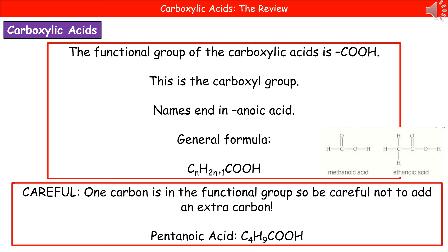For example, looking at pentanoic acid: we know it has five carbons because of 'pent,' but only four of them go into the carbon chain at the start, giving C4H9, and then the functional group at the end — the COOH — contains the other carbon. Just be mindful of that.